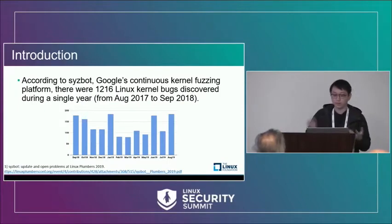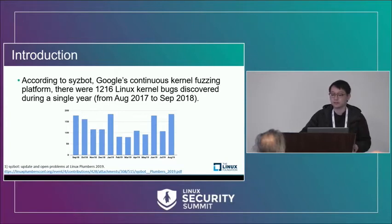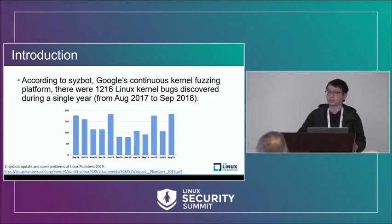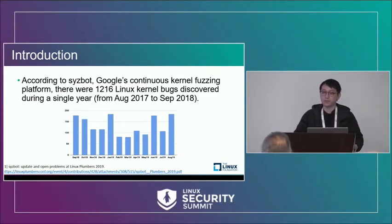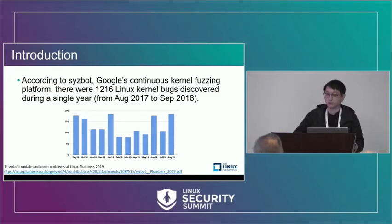According to SyzBot, Google's continuous kernel fuzzing platform, there were more than 1,000 Linux kernel bugs discovered during one single year. Given such a large number of bugs we have to deal with and the lack of human resources, it's impractical to fix all of them in a timely manner. The data was from almost three years ago — how about now?